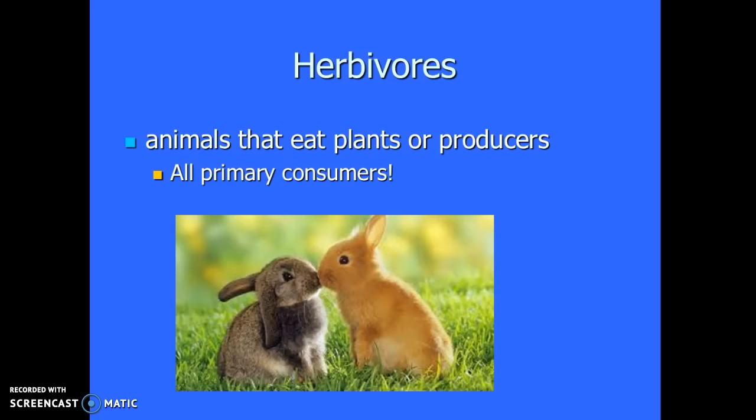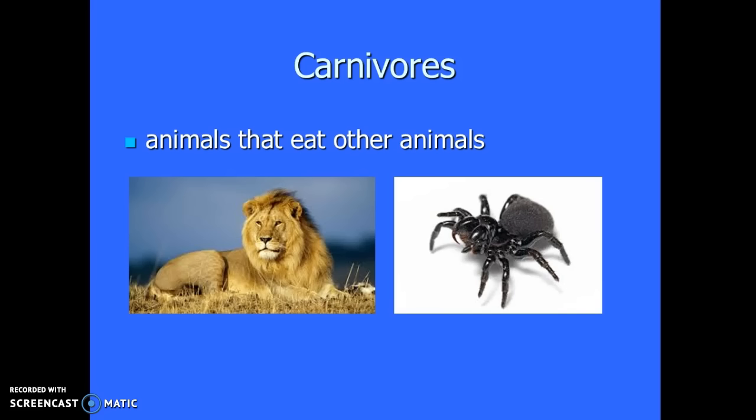A carnivore is an animal that eats other animals — they don't eat any plants. You can have a carnivore in any shape and size, just like herbivores. Usually we think of large animals, but not always. A spider is considered a carnivore because it forms a web to catch insects, and insects are an animal, so a spider would be considered a carnivore.